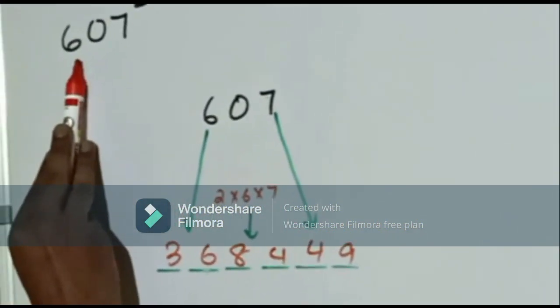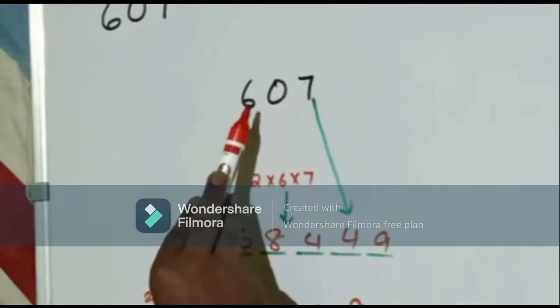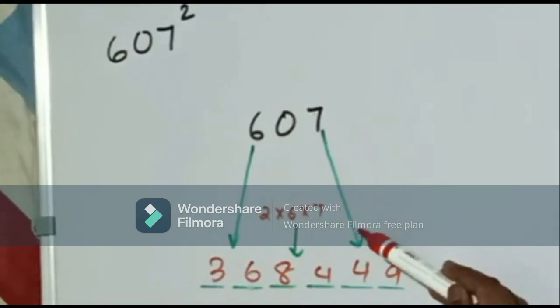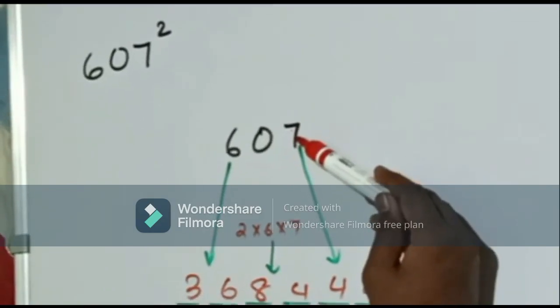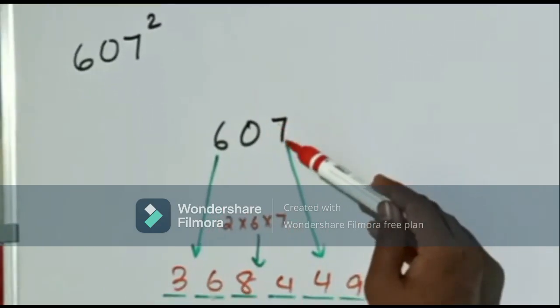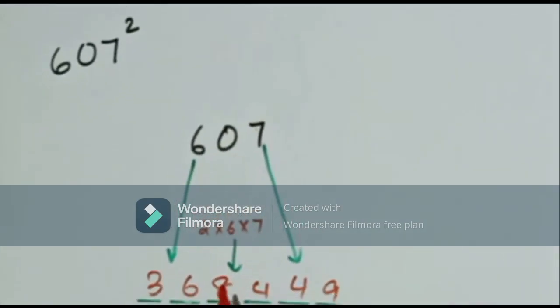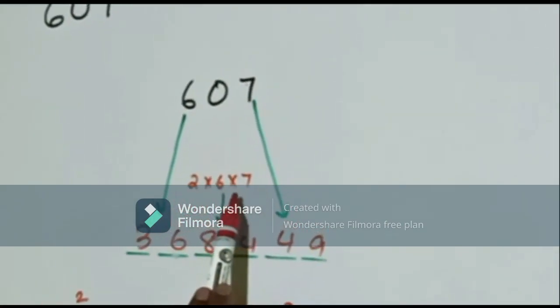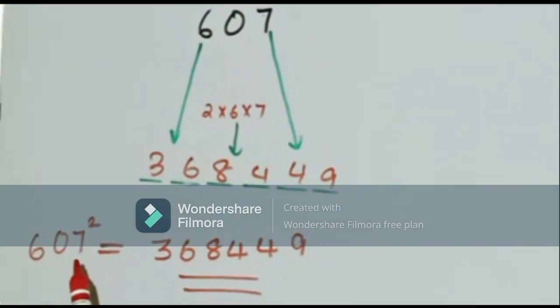Another example is the square of 607. The first 2 digits of the answer will be the square of the first digit of the number, which is 6, and its square is 36. The last 2 digits of the answer will be the square of the last digit of the number, which is 7, and its square is 49. Now, the middle 2 digits will be twice the product of the first and last term, which will be 2 into 6×7, which is 84. Now, we get the square of 607, which is equal to 368449.